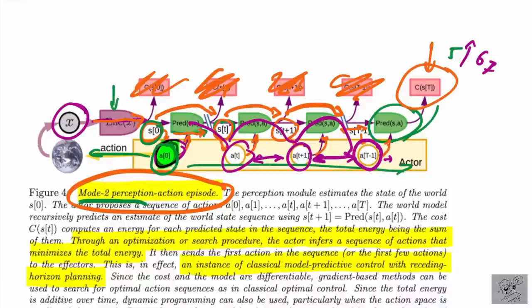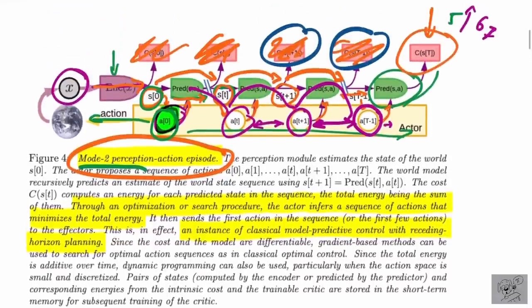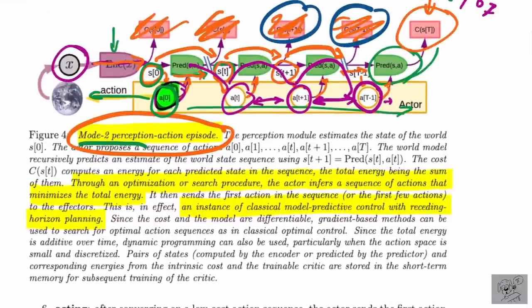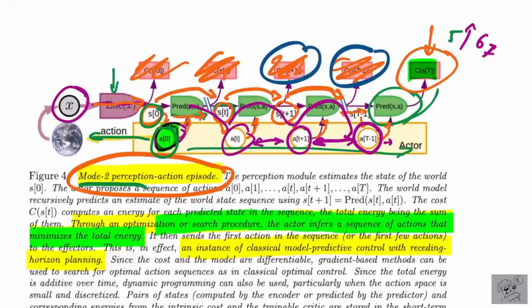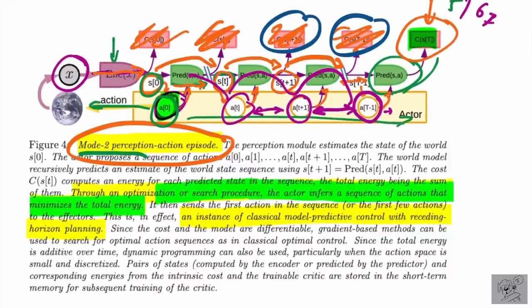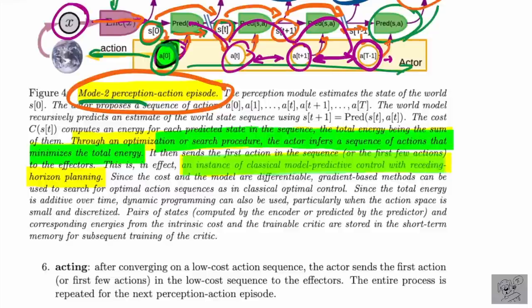So this is mode 2 perception-action episode — the model thinking about the future and figuring out through forward-looking what it needs to do to improve the outcome. That necessarily uses the world model. This is more general if you include all costs which you can have after every step, along with discount factors and so on. Inference time optimization isn't new, but it is one way LeCun sees to make these things plan forward. Through an optimization or search procedure, the actor infers a sequence of actions that minimizes the total energy — note it doesn't necessarily need to be gradient-based optimization; it could be evolutionary search or tree search. This is an instance of classical model predictive control with receding horizon planning.